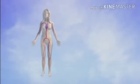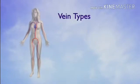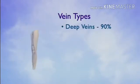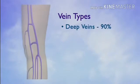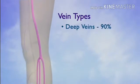Veins are responsible for the return of blood from the extremities back to the heart. There are two basic types of veins in our leg. The deep vein, which runs next to the muscles, carries 90% of our blood return from our leg to the heart.